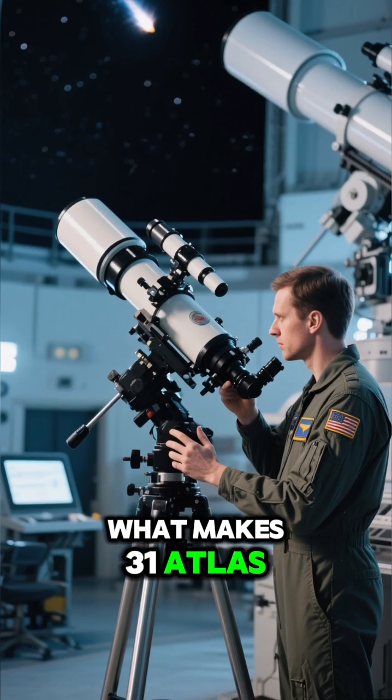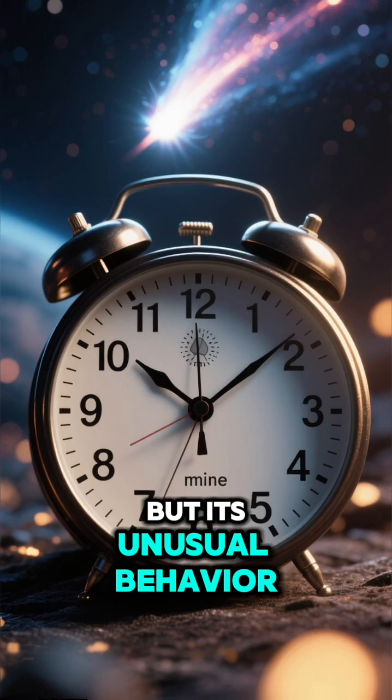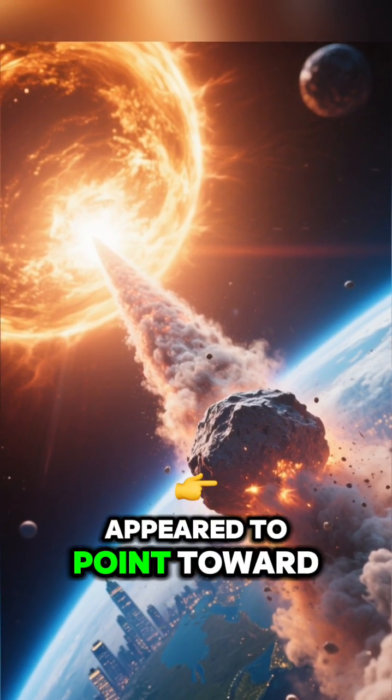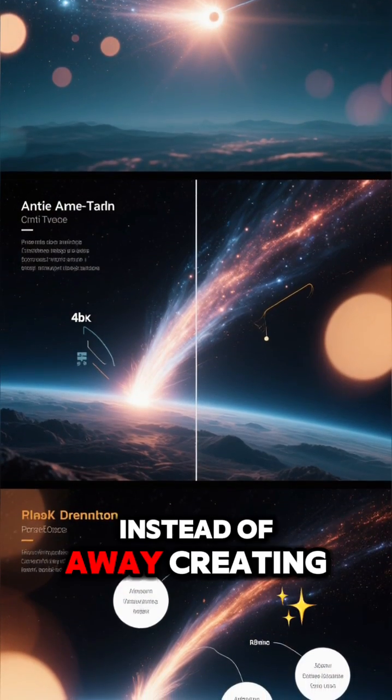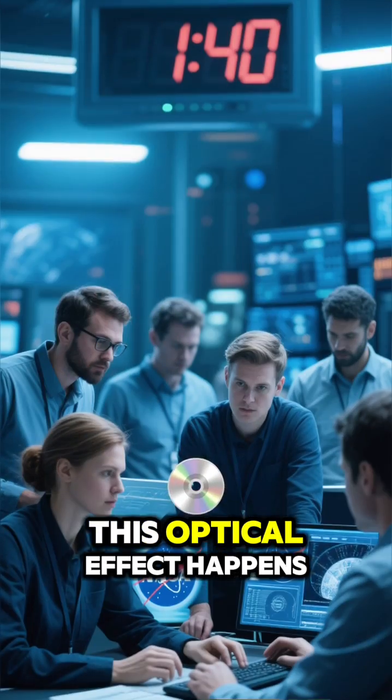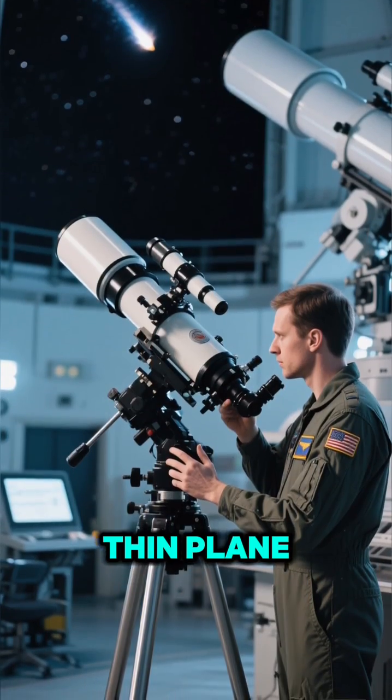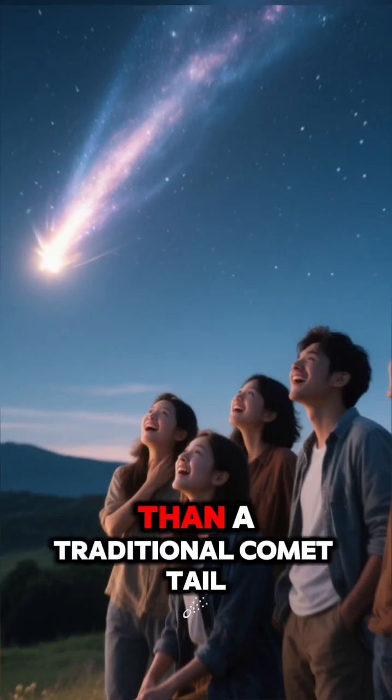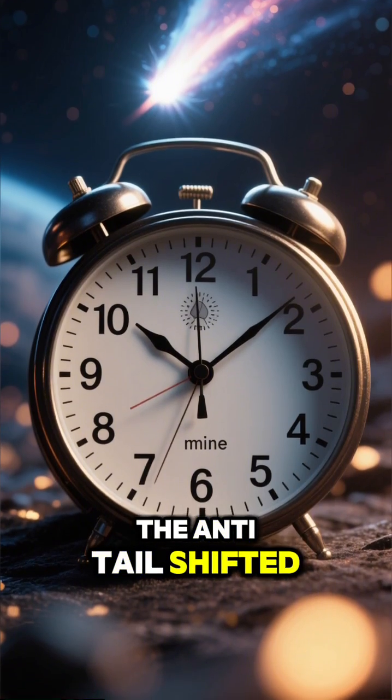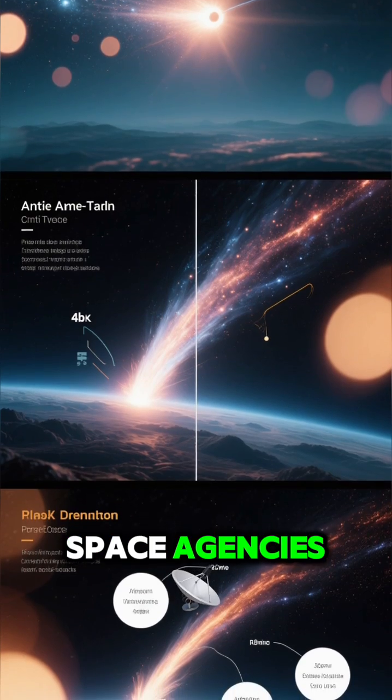What makes 31 Atlas significant is not just its size, but its unusual behavior. Researchers noted that the comet's tail appeared to point toward the Sun instead of away, creating a phenomenon called an anti-tail. This optical effect happens when dust particles form a thin plane that catches sunlight differently than a traditional comet tail. As the comet moved, the anti-tail shifted back to a normal tail, sparking interest among astronomers and space agencies.